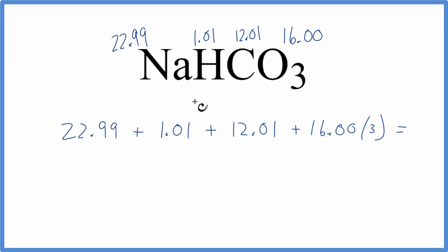we end up with a molar mass for NaHCO3 of 84.01, and we need to write our units now, grams per mole.